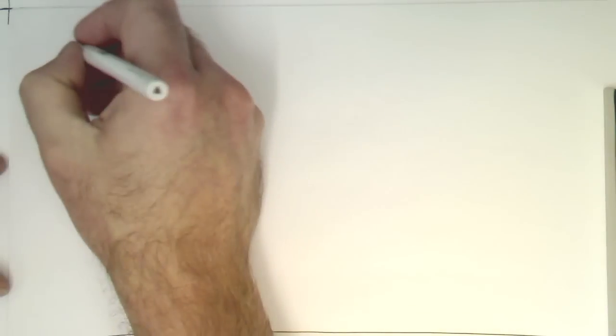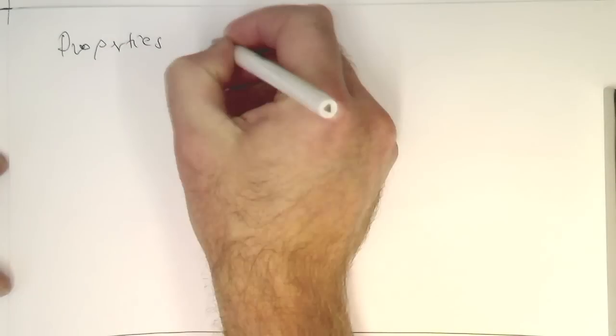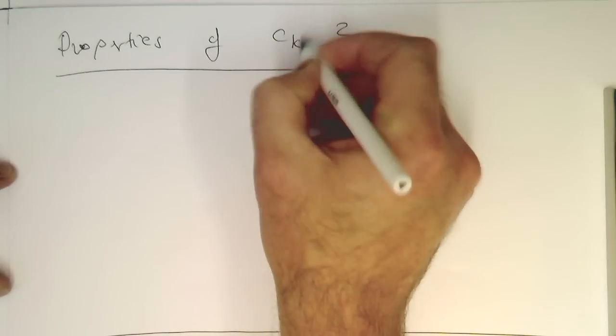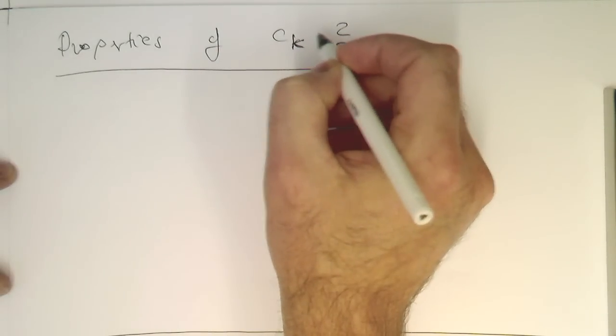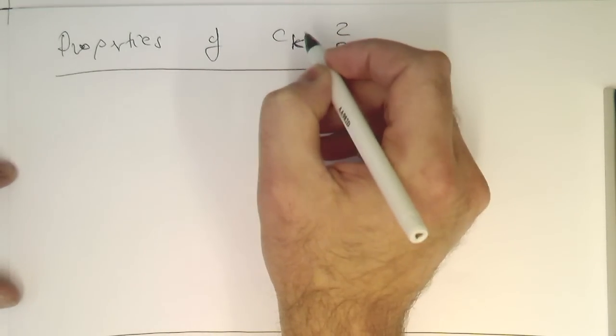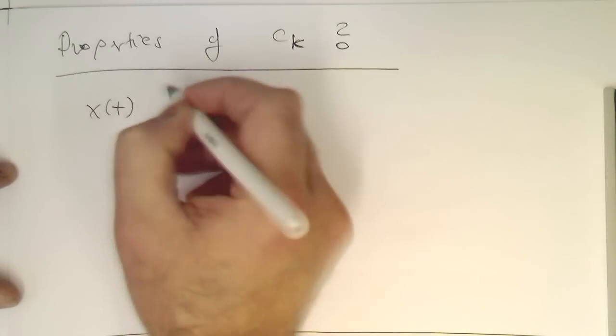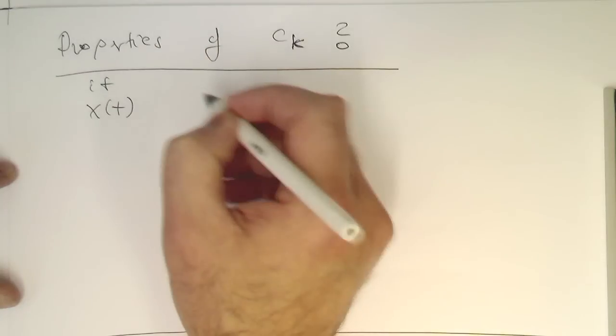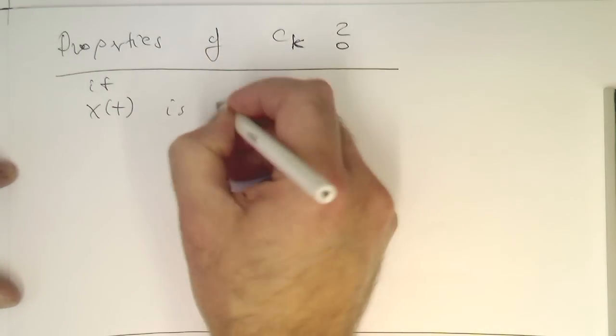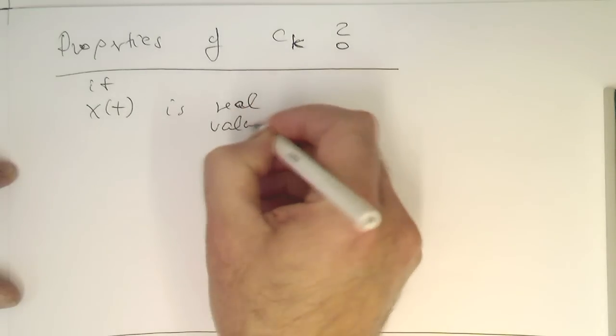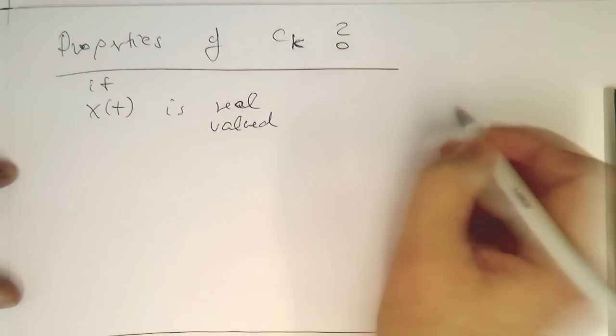So what are these properties of ck? Is there anything we can say about ck? That's a very interesting or very important relation. If x of t is real valued, then...